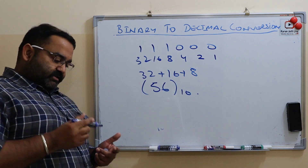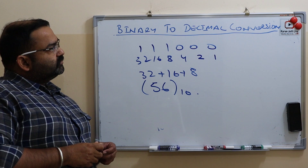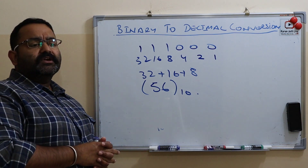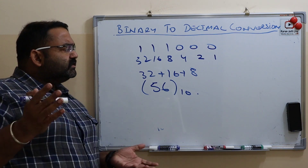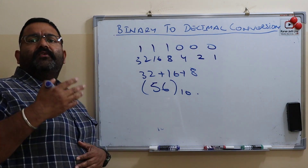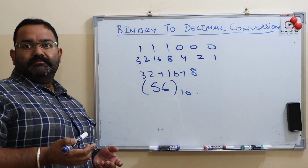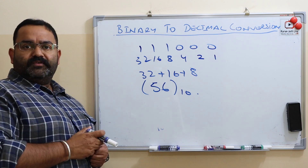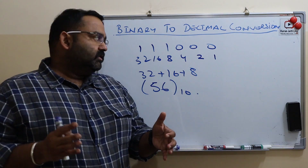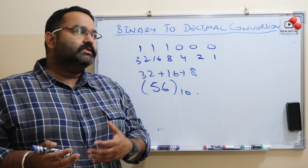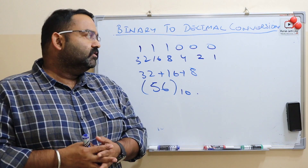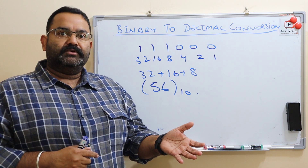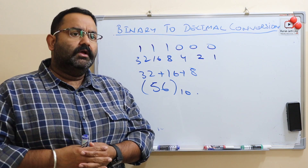So guys, this is how you convert a binary number to decimal using a shortcut method. This technique is very helpful while you are doing your exam because in an exam you are always running out of time. We did some examples in which we can convert a binary number to decimal number using a shortcut method.